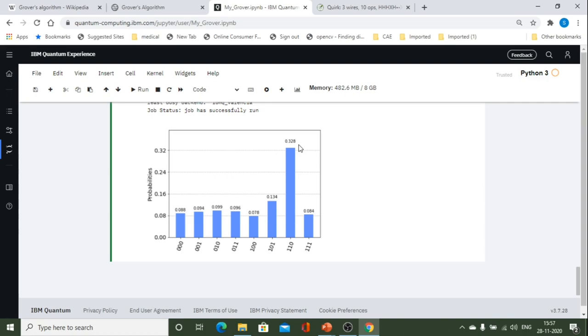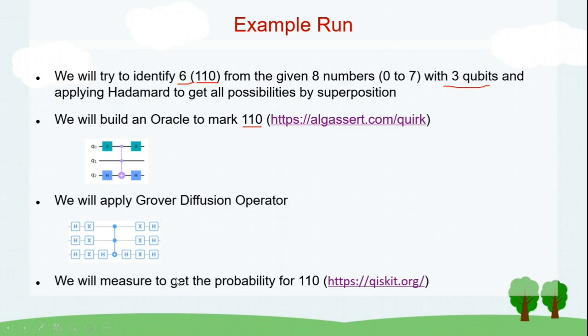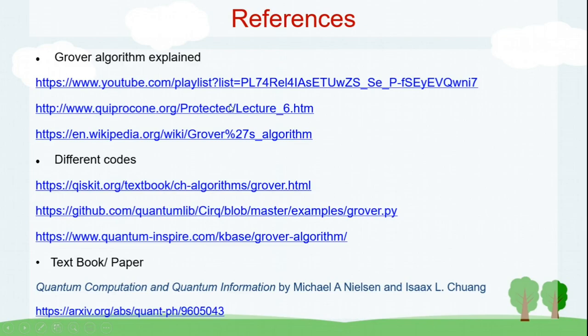You see here, though the probability is less, but still, this is way ahead of all other states. Right? As we mentioned earlier, if you want to increase the probability, you run US and U omega again. That will help us to get better probability. Very good. We are able to mark one particular thing in an unorganized or unstructured database. We'll go back to our presentation.